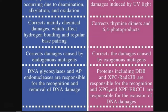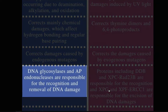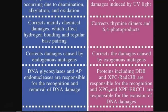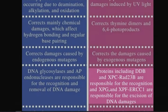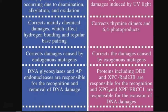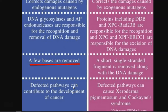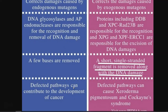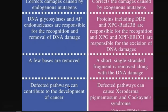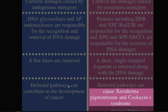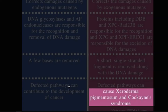The enzyme systems involved in base excision repair include DNA glycosylases and AP endonucleases — that is, apurinic endonucleases — responsible for recognition and removal of DNA damage. Whereas in nucleotide excision repair, different proteins including DDB, XPC, and RAD23B are responsible for clearing DNA damage. In base excision repair, generally a few bases are deleted or removed, whereas in nucleotide excision repair, a short single-stranded fragment of nucleotides is removed along with the damaged DNA. Defects in base excision repair can lead to cancer, whereas defects in nucleotide excision repair may lead to diseases such as xeroderma pigmentosum and Cockayne's syndrome.